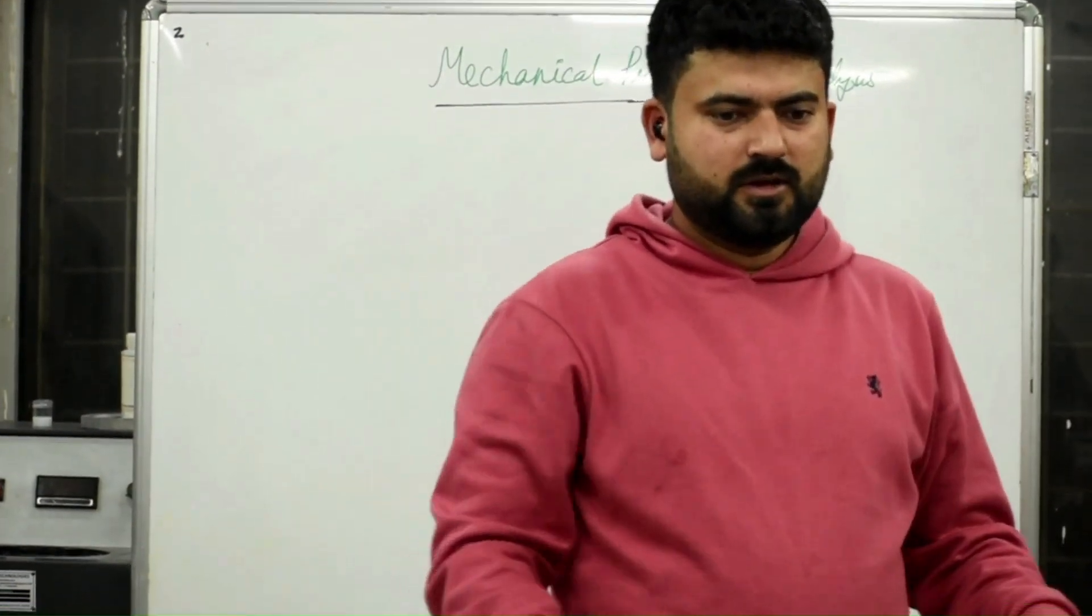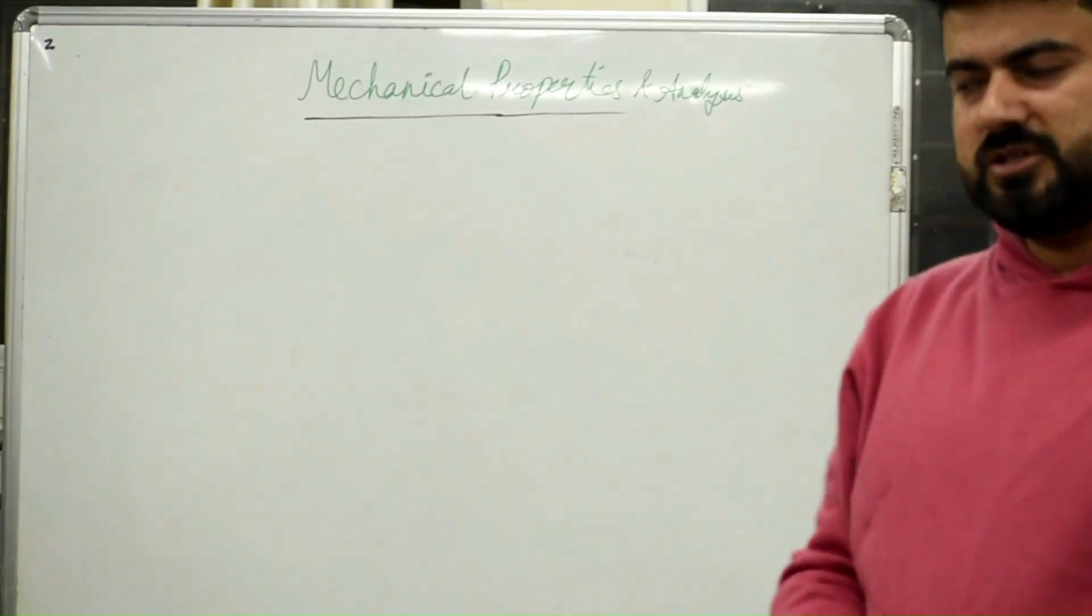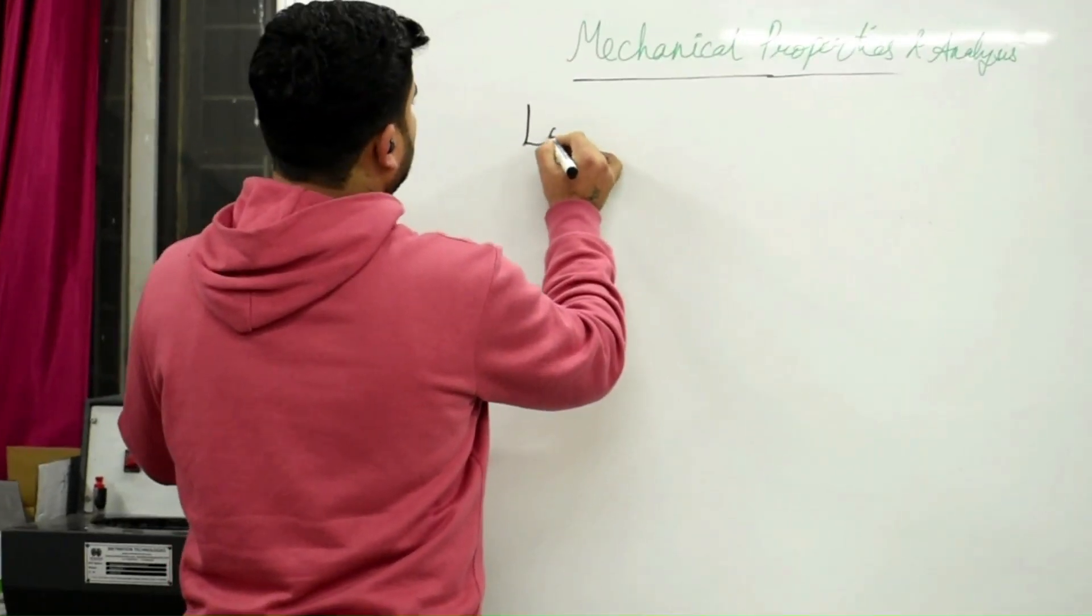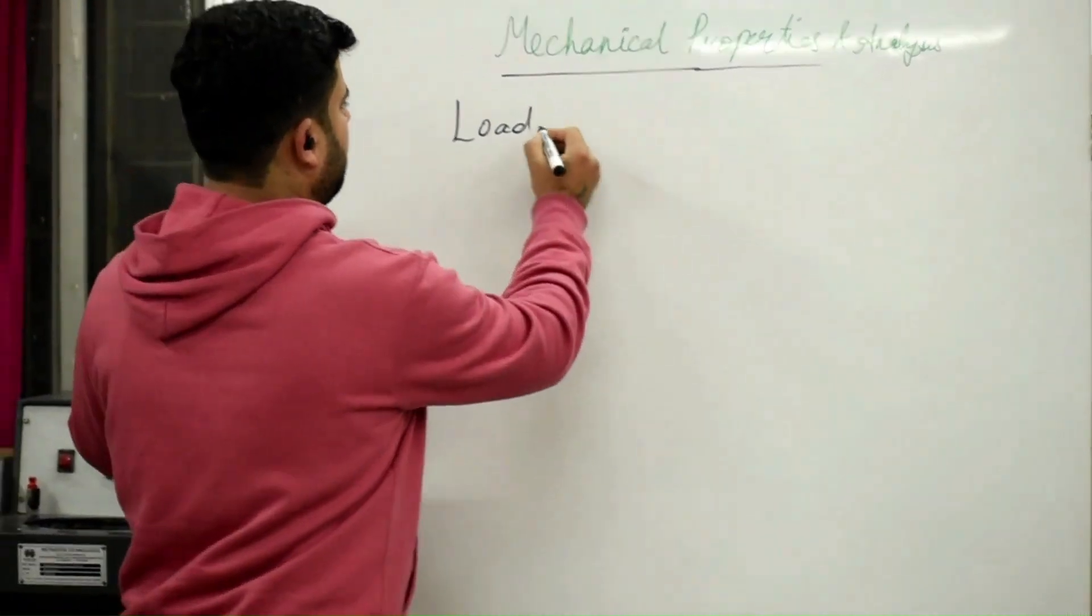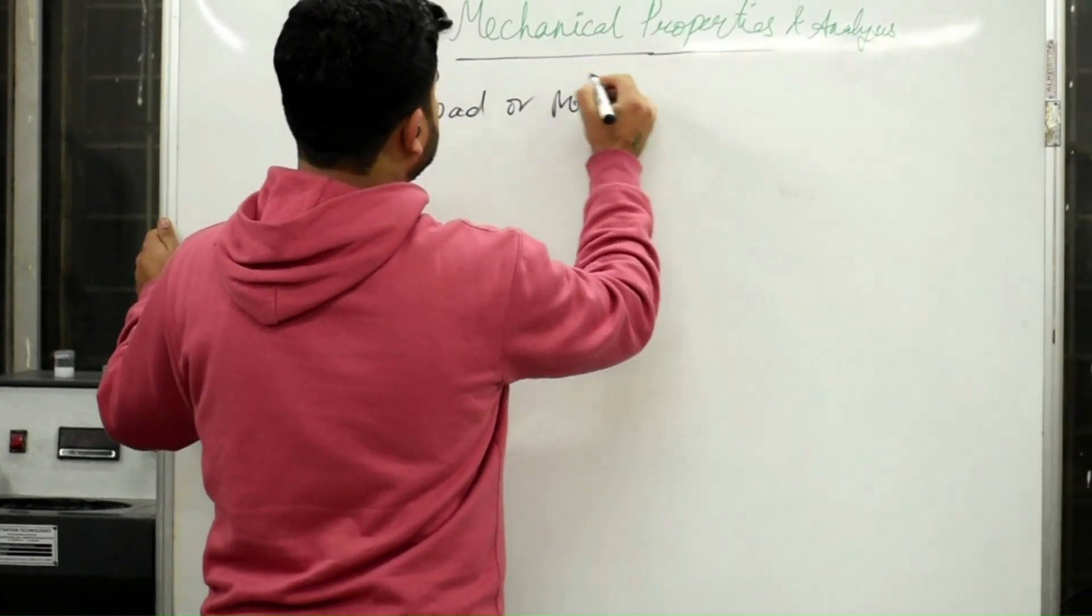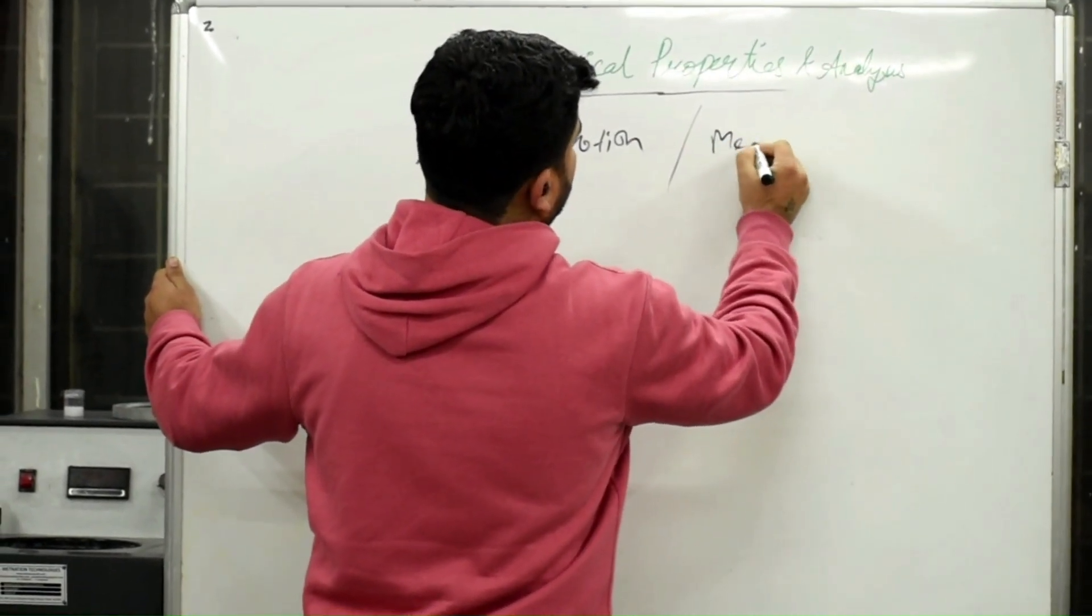Any property which we find out using two things - it may be either Load or Motion - can be said as the Mechanical Properties.